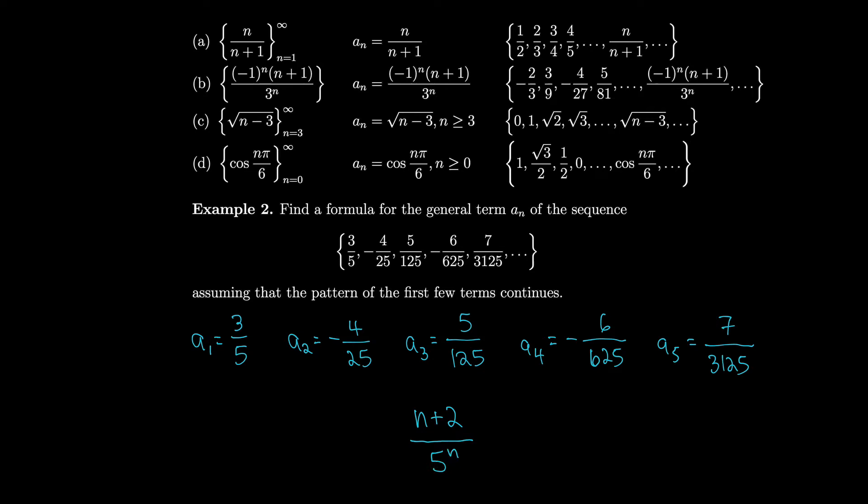Now we worry about the sign. In example (b) the first term was negative and the second positive, but here the first term is positive and the second is negative. So instead of (−1)^n, we shift to (−1)^(n−1). Plugging in n=1 gives (−1)^0 = +1 (positive); n=2 gives (−1)^1 = −1 (negative). You could also write (−1)^(n+1) — it gives the same effect. So our formula for an is (−1)^(n−1) times (n+2) over 5^n.